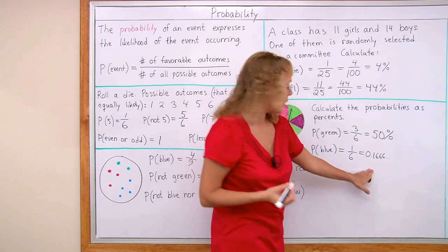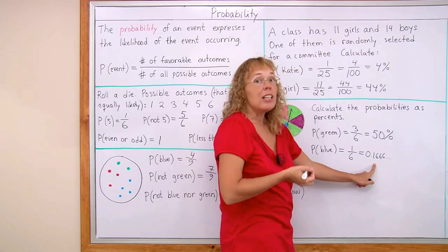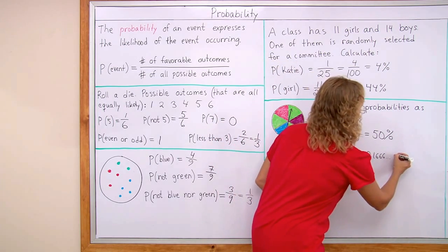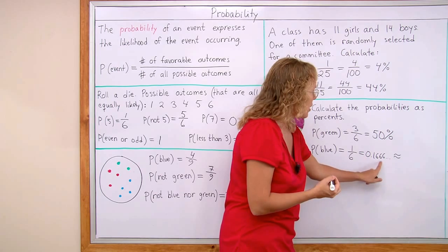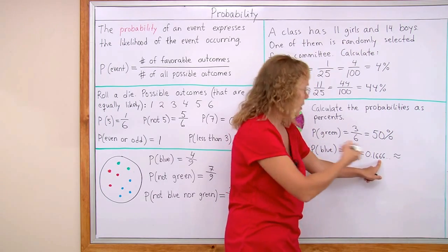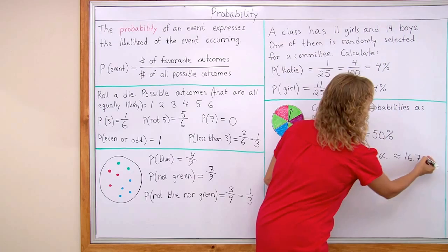And then we write this as a percent. Which if it was zero point one six it would be sixteen percent. I need to round it though because it is a repeating decimal. It's gonna be sixteen point seven percent. Round it to the nearest tenth of a percent.